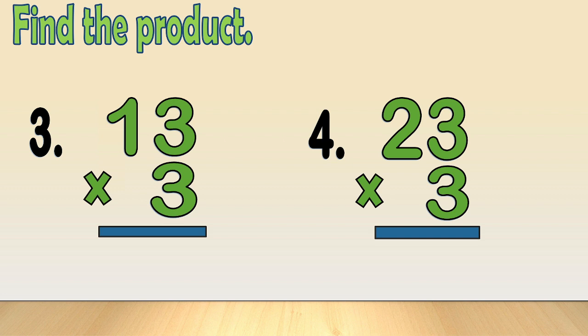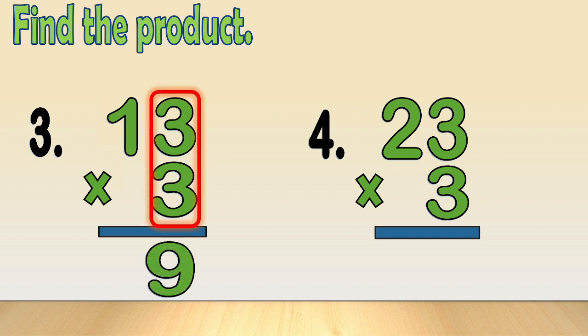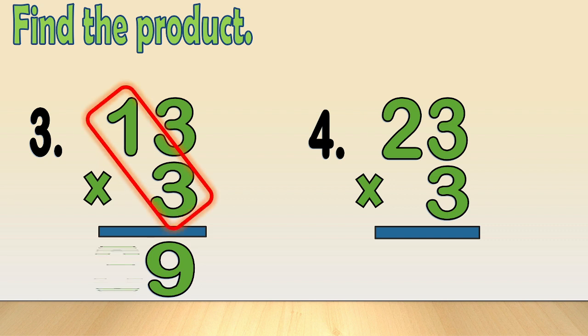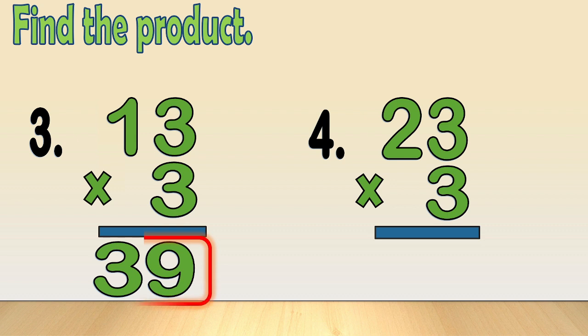Number 3: 13 times 3. Multiply the multiplier by the digits in ones and tens place, respectively, and write the product in their corresponding places. 3 times 3 is equal to 9 ones, and 1 times 3 is equal to 3 tens. Our final answer is 39.